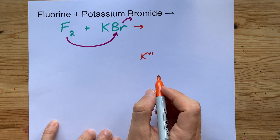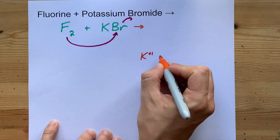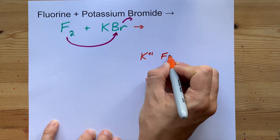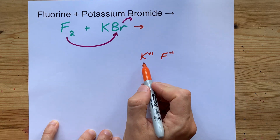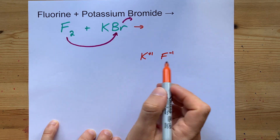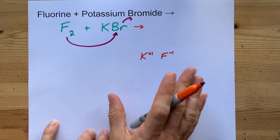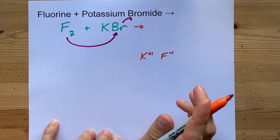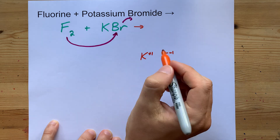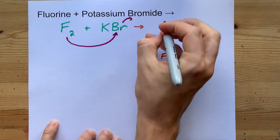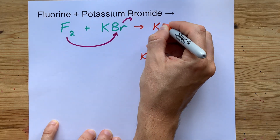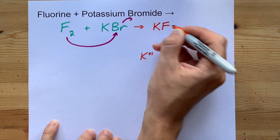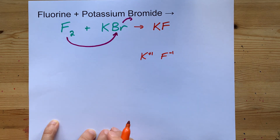Potassium is in column one. Fluorine likes having a charge of minus one — it's in group 17. All the halogens like having a charge of minus one. So the chemical that is made, potassium fluoride, is just KF.